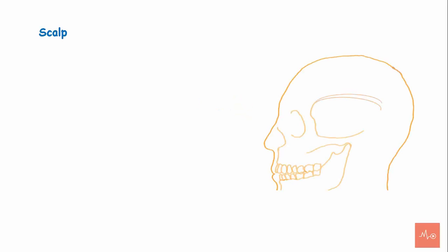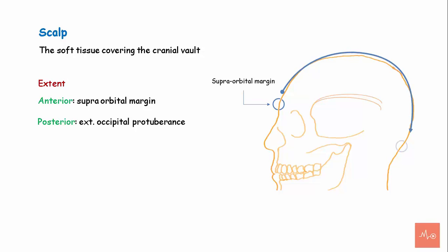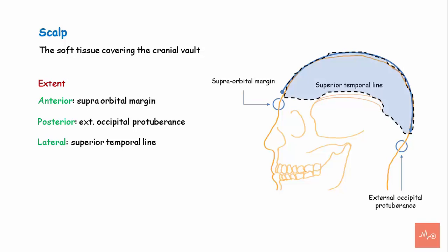Scalp is a soft tissue covering the cranial vault. It extends from the supraorbital margin in the anterior region to the external occipital protuberance posteriorly. Laterally, it extends to the superior temporal line.